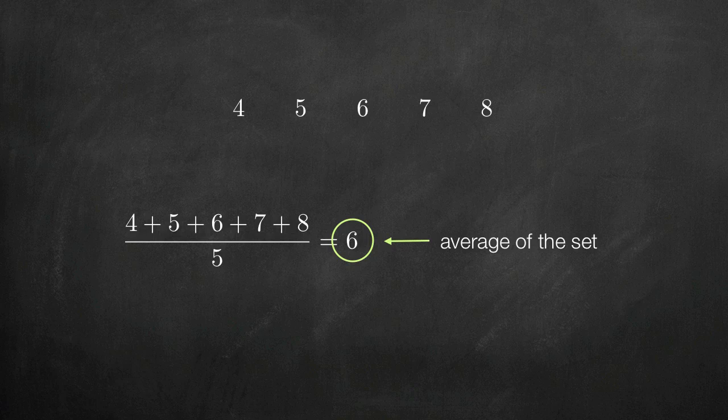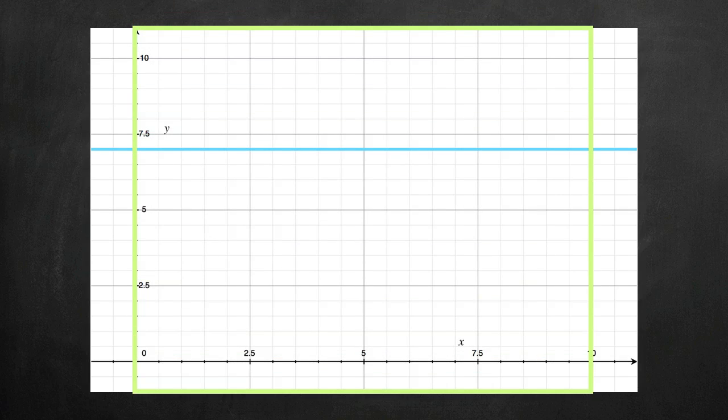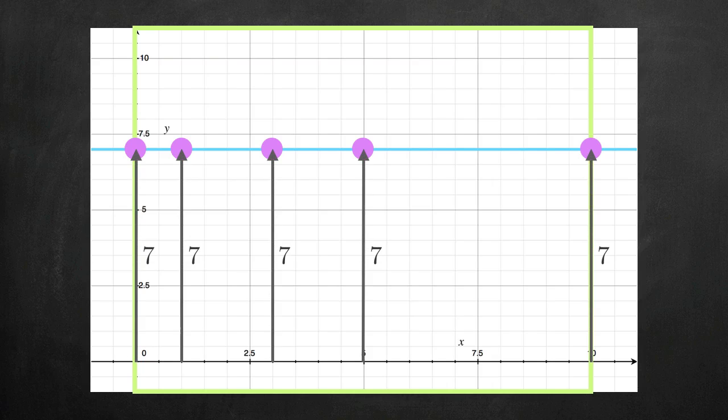Now think about a simple graph, like this, defined on the interval x equals 0 to x equals 10. The value of this function everywhere on the interval is 7, because no matter where I test inside the interval, the height of the function, or the distance between the function and the x-axis, is 7.